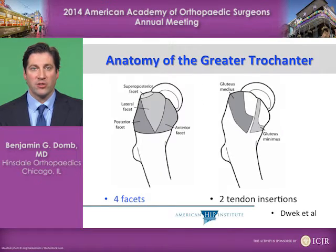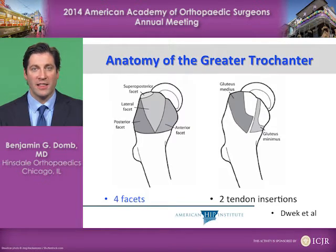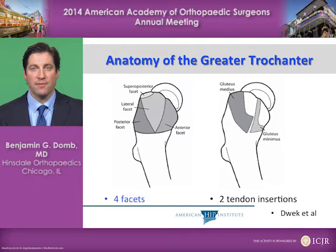The anatomy of the greater trochanter has been defined into four facets: the superior posterior, the lateral, the posterior, and the anterior. The gluteus medius spans the superior posterior and lateral facet insertions. The gluteus minimus inserts on the anterior facet of the greater trochanter.